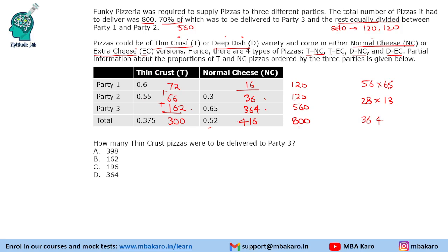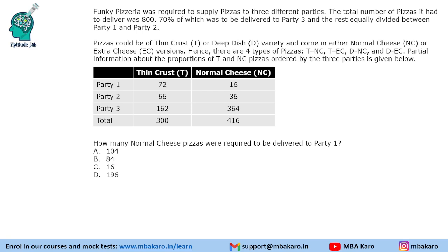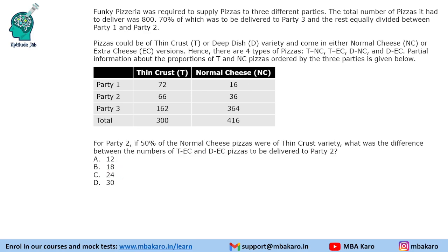Question 1: How many thin crust pizzas were to be delivered to party 3? Looking at the table, party 3 has 162 thin crust pizzas. Question 2: How many normal cheese pizzas were required for party 1? From the table, party 1 has 16 normal cheese pizzas.